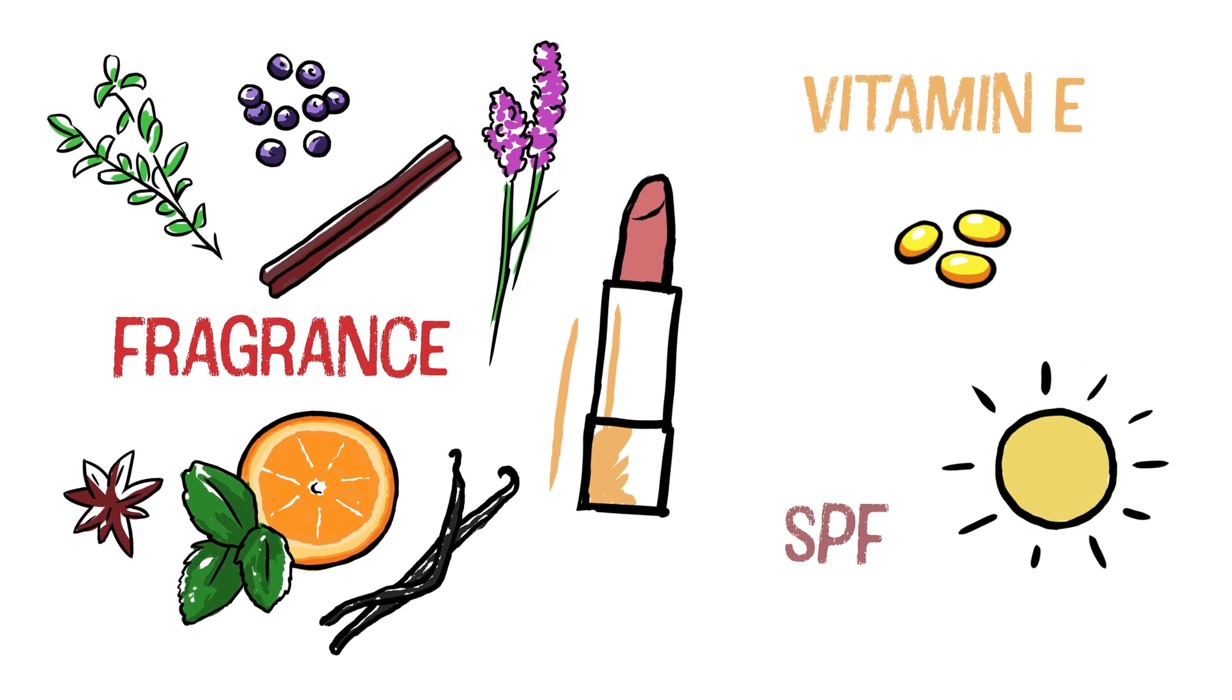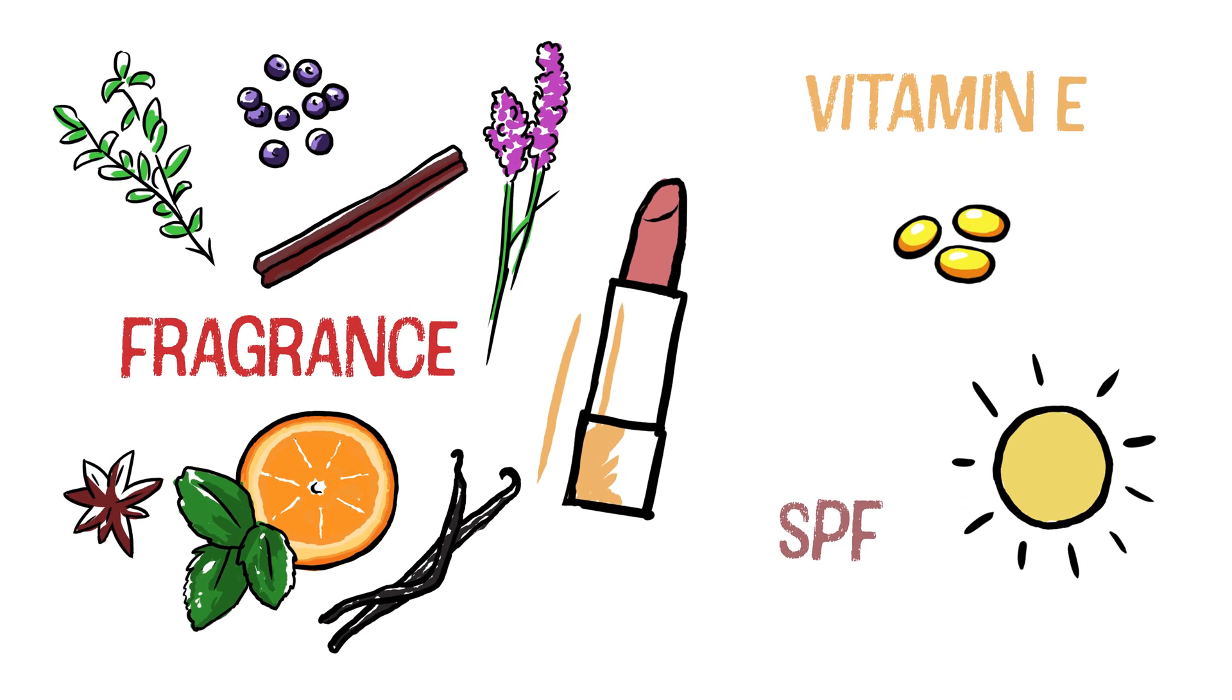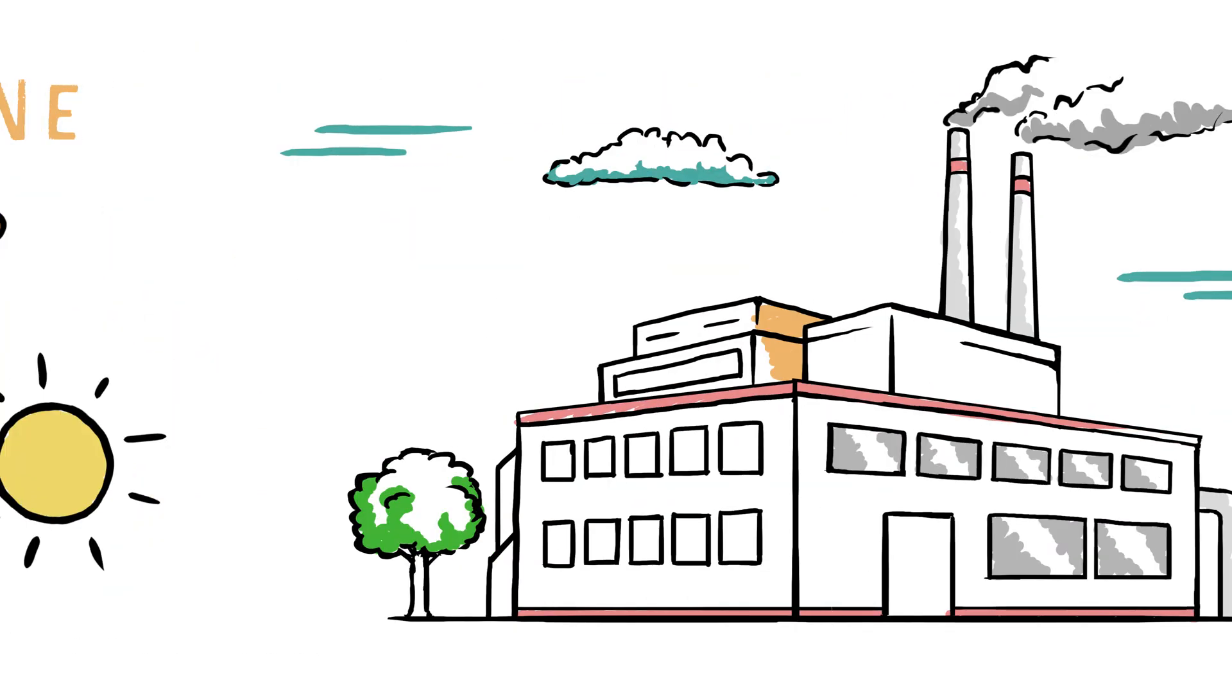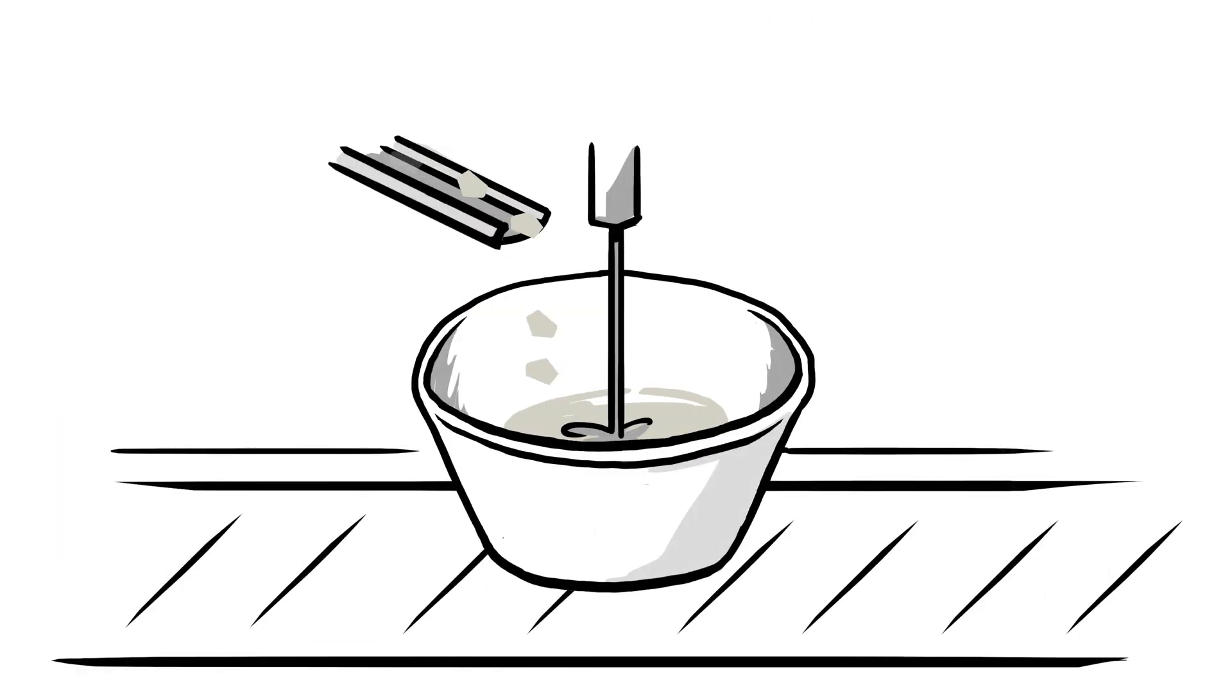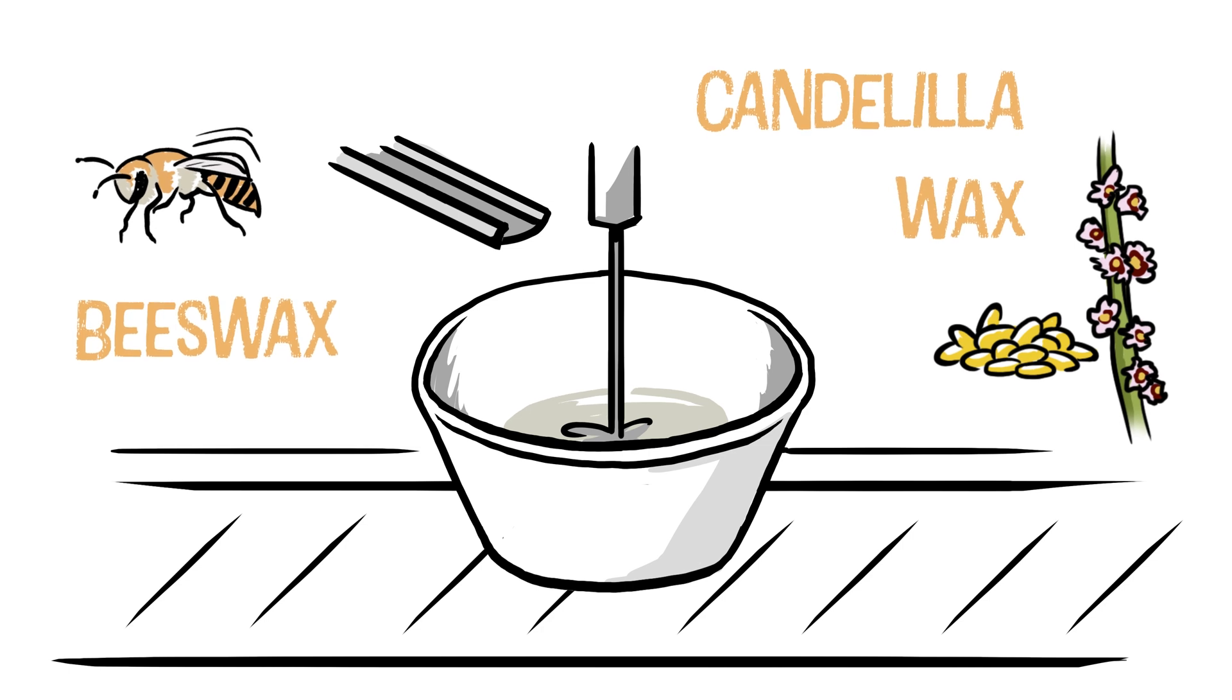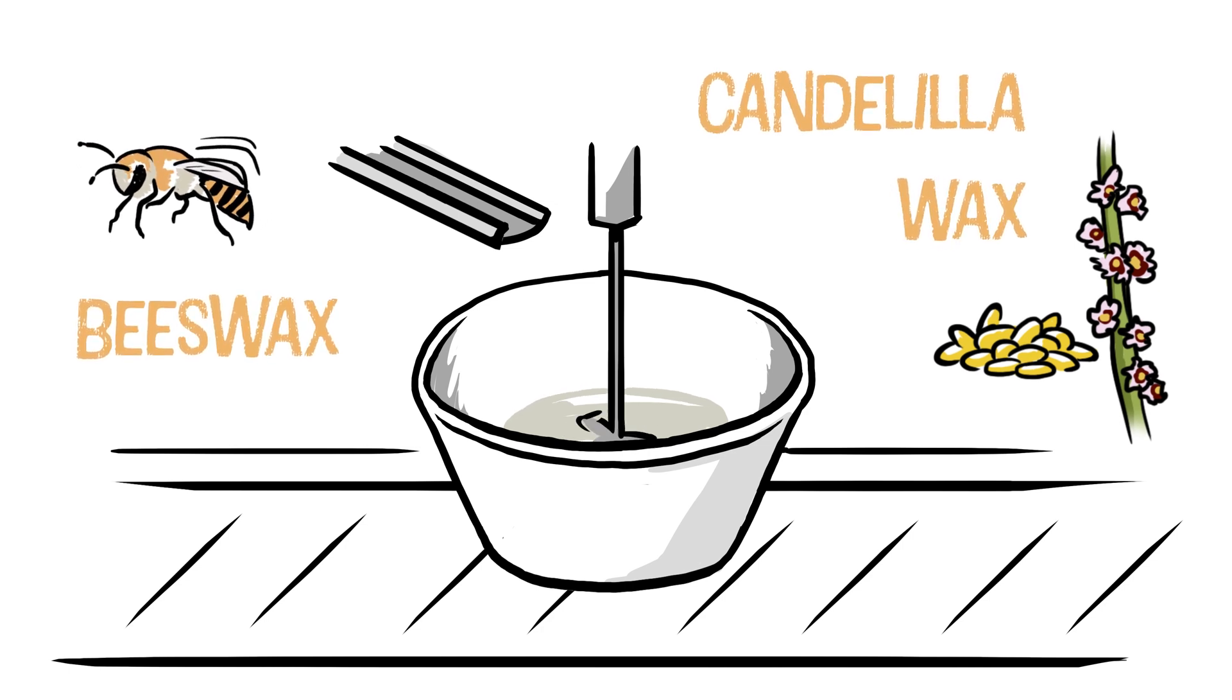Okay, but how does all that stuff actually become lipstick? Well, it starts in a cosmetics lab or factory. First, they melt down special waxes, like beeswax or plant-based candelilla wax. That's what gives lipstick its solid shape.